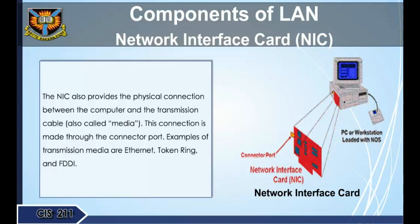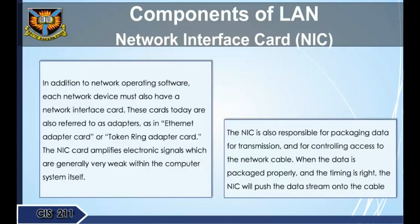The network interface card (NIC) provides the physical connection between the computer and the transmission cable, also called media. This connection is made through the connector port. Examples of transmission media are Ethernet, Token Ring, and FDDI. Each network device must have a NIC card, also referred to as an adapter. The NIC amplifies electronic signals, packages data for transmission, and controls access to the network cable. When data is packaged properly and timing is right, the NIC pushes the data stream onto the cable.